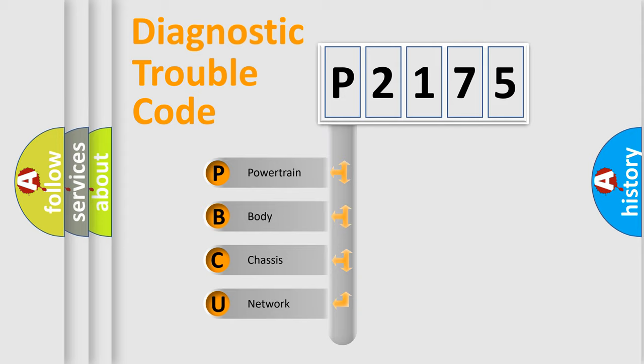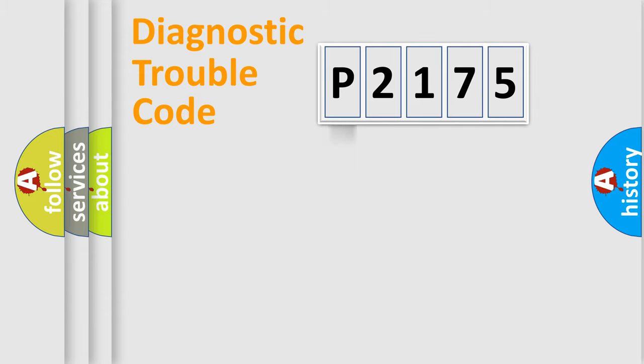We divide the electric system of automobile into four basic units: powertrain, body, chassis, and network. This distribution is defined in the first character code.